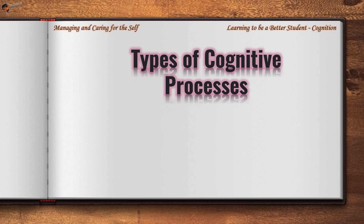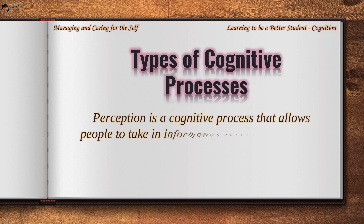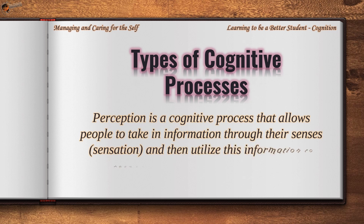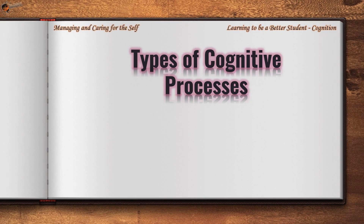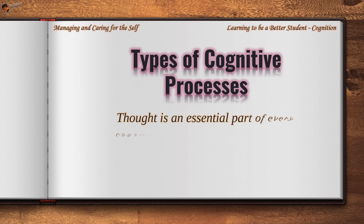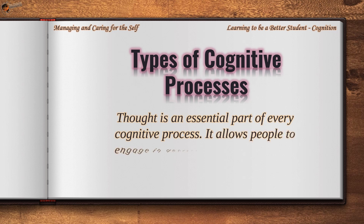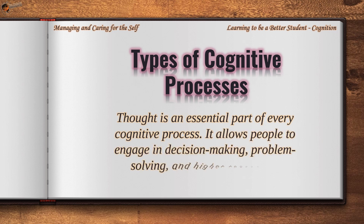Perception is a cognitive process that allows people to take in information through their senses or sensation and then utilize this information to respond and interact with the world. Thought is an essential part of every cognitive process. It allows people to engage in decision-making, problem-solving, and higher reasoning.